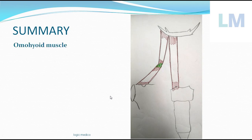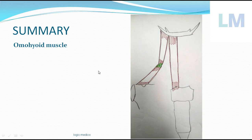In summary: the omohyoid muscle starts from the suprascapular notch of the scapula and the suprascapular ligament. It has an inferior belly connected by an intermediate tendon, and via the superior belly it attaches to the lower border of the body and the greater cornu of the hyoid bone. Its action is to depress the hyoid bone, which is elevated during swallowing and vocal movements. Nerve supply: ansa cervicalis — superior root supplies superior belly, inferior root supplies inferior belly. Ansa cervicalis is a loop of nerve formed by C1, C2, C3.